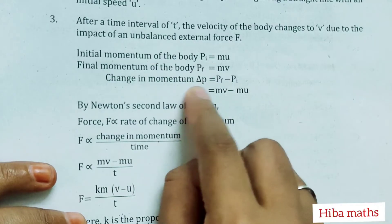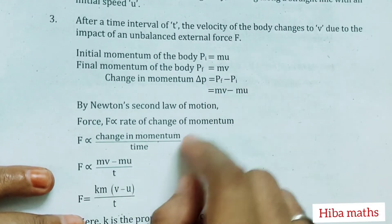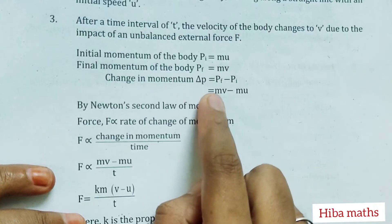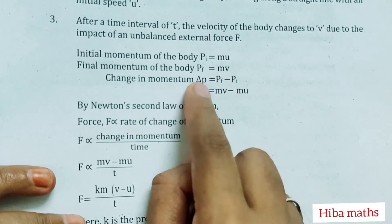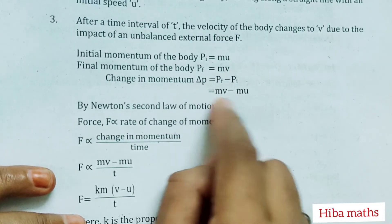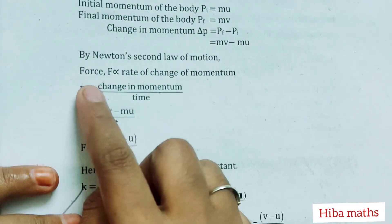Change in momentum, ΔP = Pf - Pi. Final minus initial: mv - mu. By Newton's second law of motion,